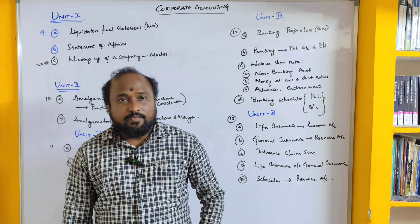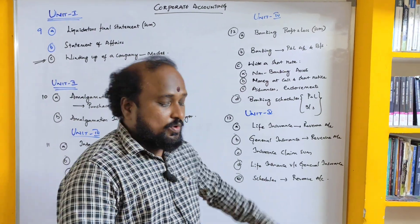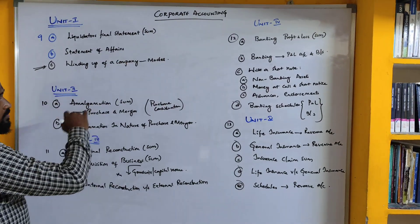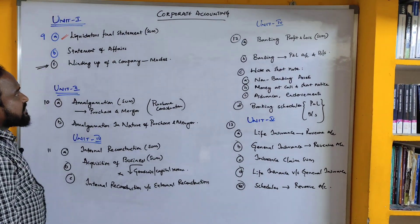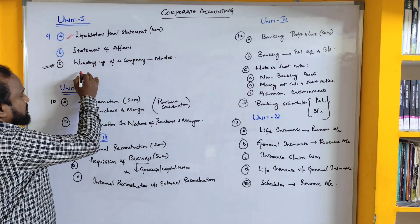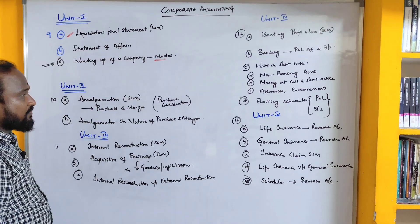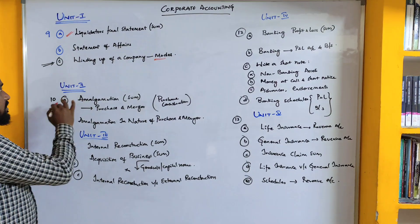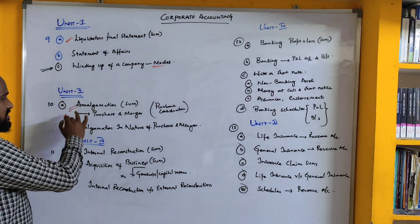Now let's look at the paper pattern for Corporate Accounting. From Unit Number 1, one question is on the liquidator's financial statement sum, and another is on statement of affairs or winding up of a company, covering the various modes of winding up. From Unit Number 2, you will be asked an amalgamation sum for sure.